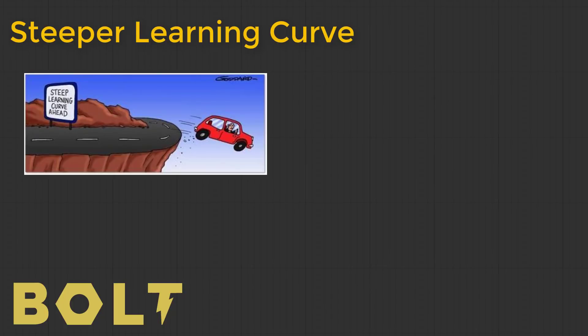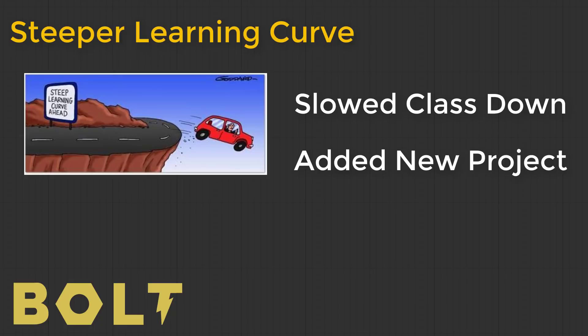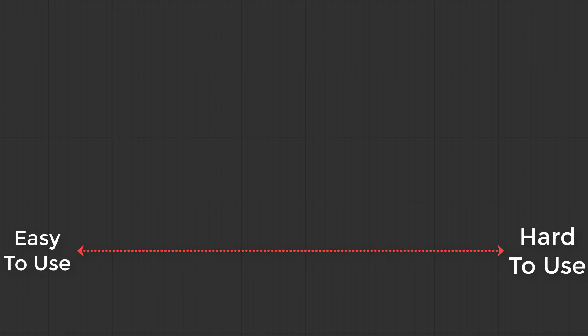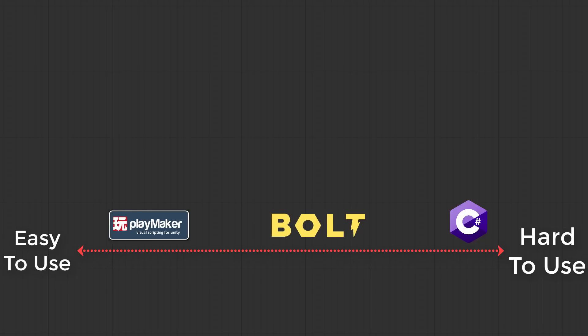On the other hand, Bolt does have a steeper learning curve. This year in my class, I had to add a whole other project and slow down the first semester because it was harder for my students to get up to speed with Bolt. One way I think about this is on a spectrum — on one axis, ease of use versus difficult use. Playmaker is definitely down there on the easy-to-use scale. On the other end is C sharp, it's pretty challenging. And Bolt is somewhere in the middle, maybe a little bit more towards the C sharp side — much easier to use than C sharp, and harder to use than Playmaker.